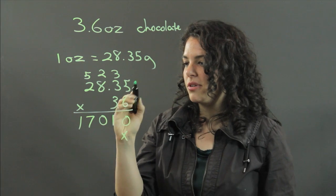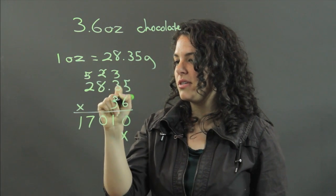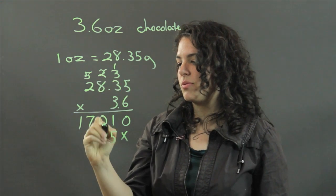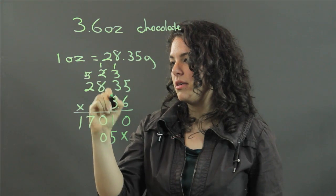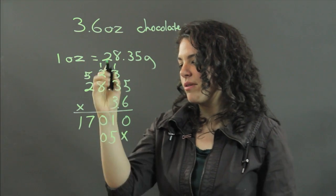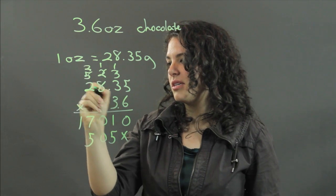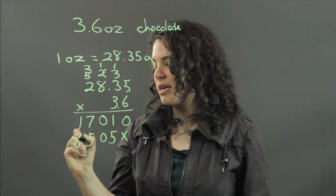I'm going to create a space here. 3 times 5, I'm going to get rid of these. 3 times 5 is 15. 3 times 3 is 9, plus 1 is 10. 3 times 8 is 24, plus 1 is 25. 3 times 2 is 6, plus 2 is 8.